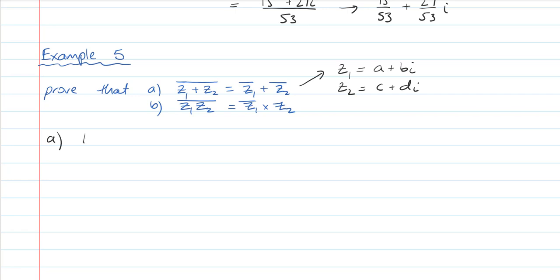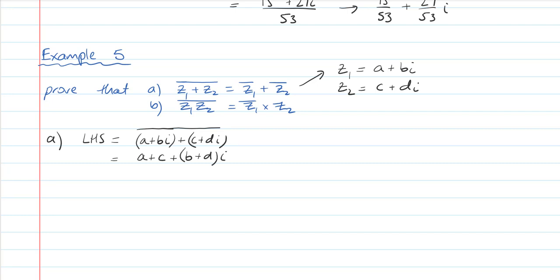To answer part a, the left-hand side — remember this is a proof — is equal to the conjugate of a plus bi plus c plus di, which equals the conjugate of a plus c plus b plus d i. When you conjugate something you just make the imaginary component negative, so it's a plus c minus b plus d i.